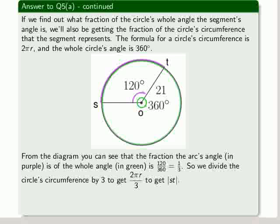So we divide the circle's circumference by 3. It was 2πr, so we get 2πr over 3, and that will give us the length of ST.